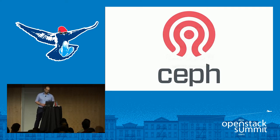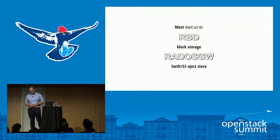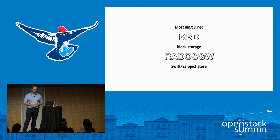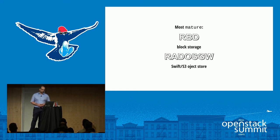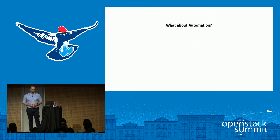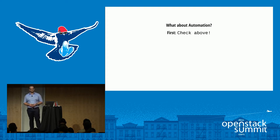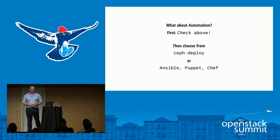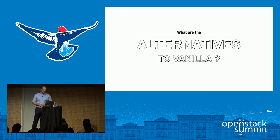Let's come to Ceph. With Ceph, there are at least two parts that are really mature: RADOS block devices and the RADOS gateway object storage interface. CephFS is not that mature but it's on the way to being enterprise-ready. For automation of Ceph, the same advice applies — don't do it yourself. You can choose from either Ceph-deploy or Ansible, Puppet, and Chef — that's what's available in the community.